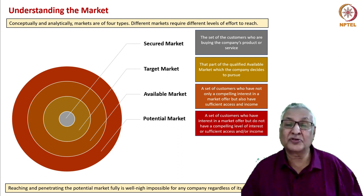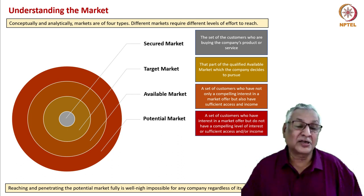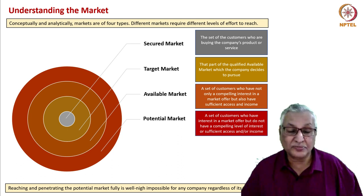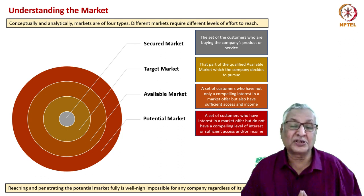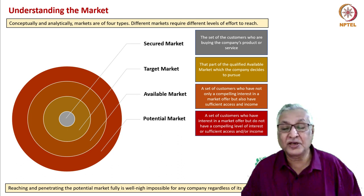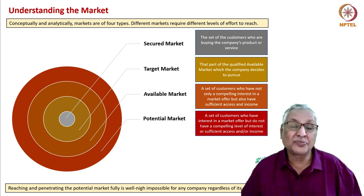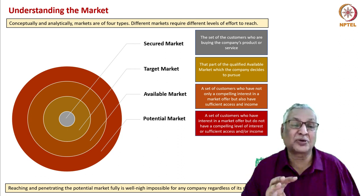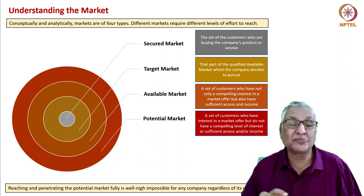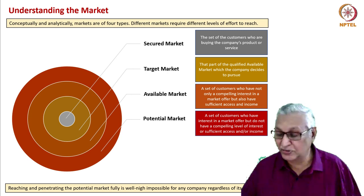Even within the target market, a company may operate only in the secured market — the set of customers who are actually buying the company's product or service. The available market is a subset of the potential market; the target market is a subset of the available market; and the secured market is just a fraction of the target market. Reaching the potential market fully is impossible for any company, but every company should try to expand coverage from its core secured market to the target market and then to the available market, expanding ambitions as resources grow.